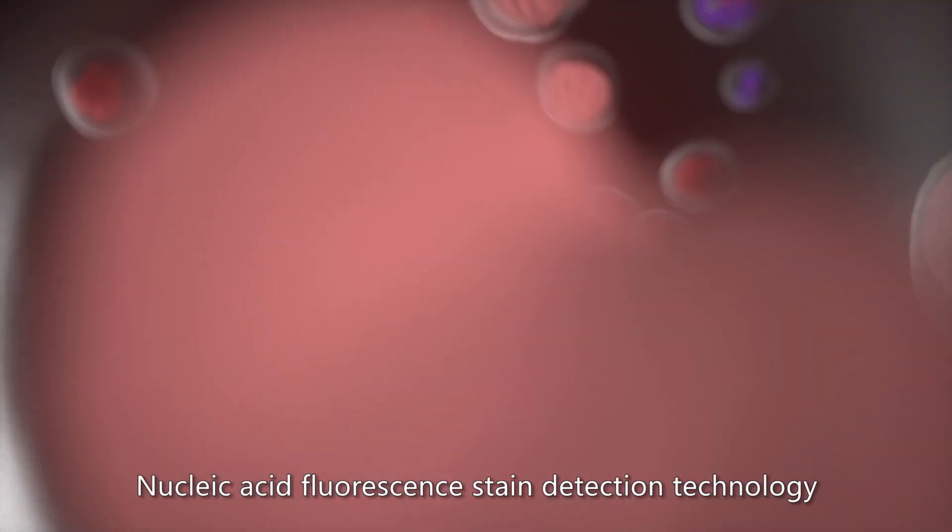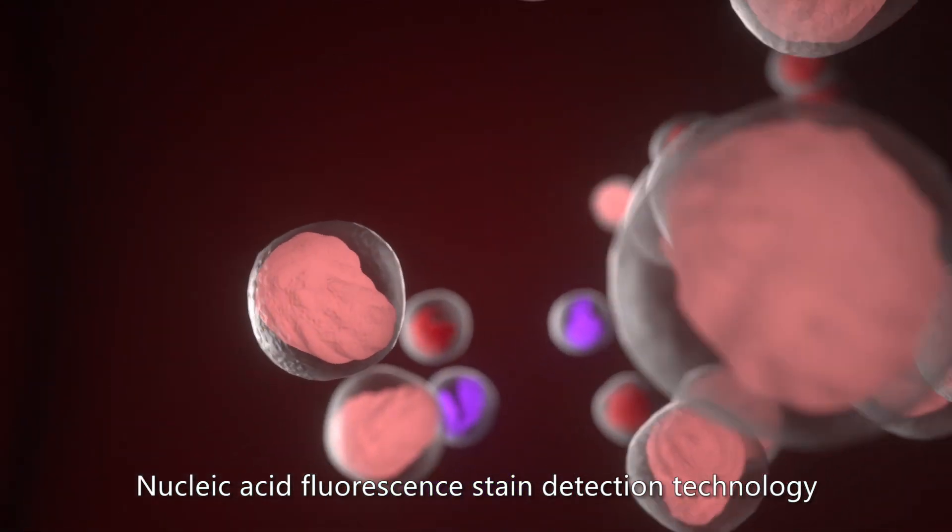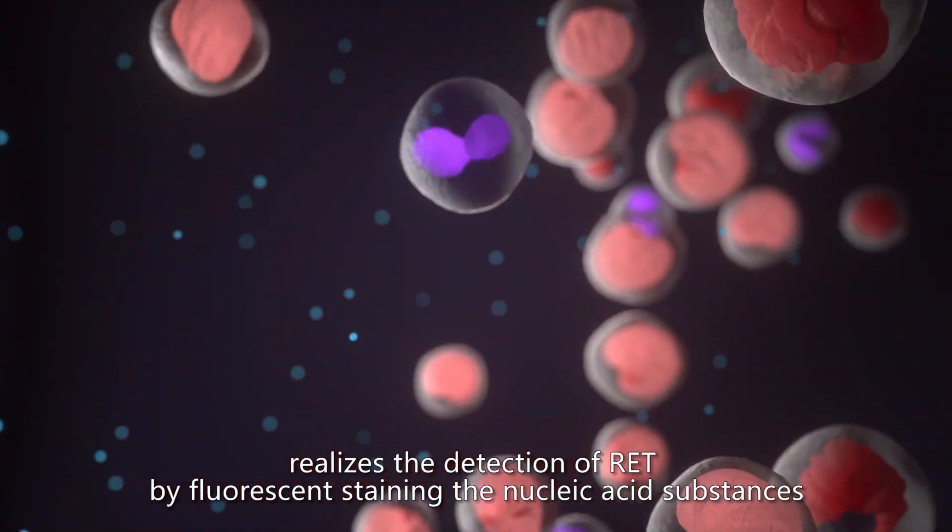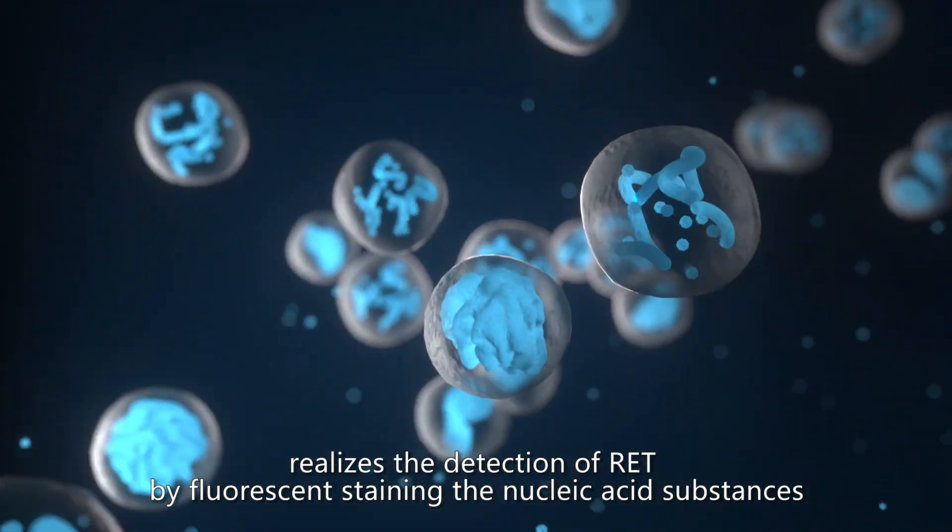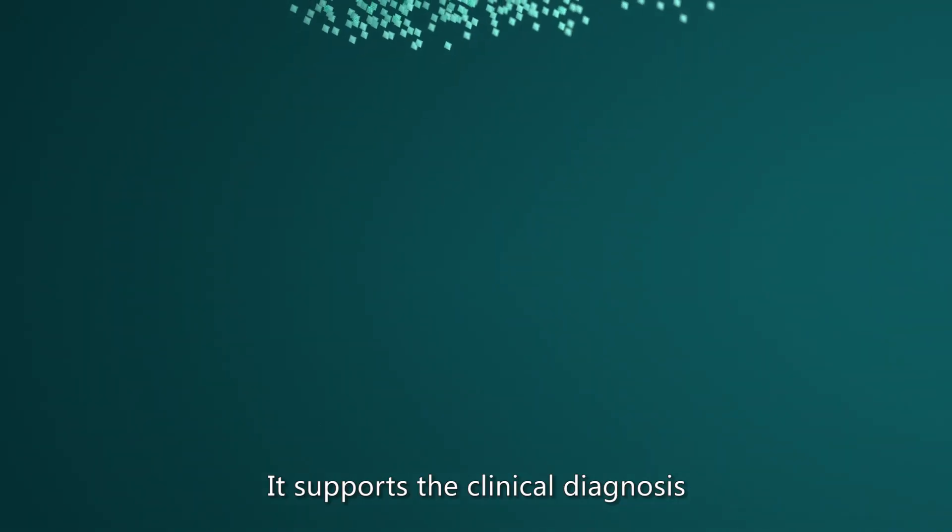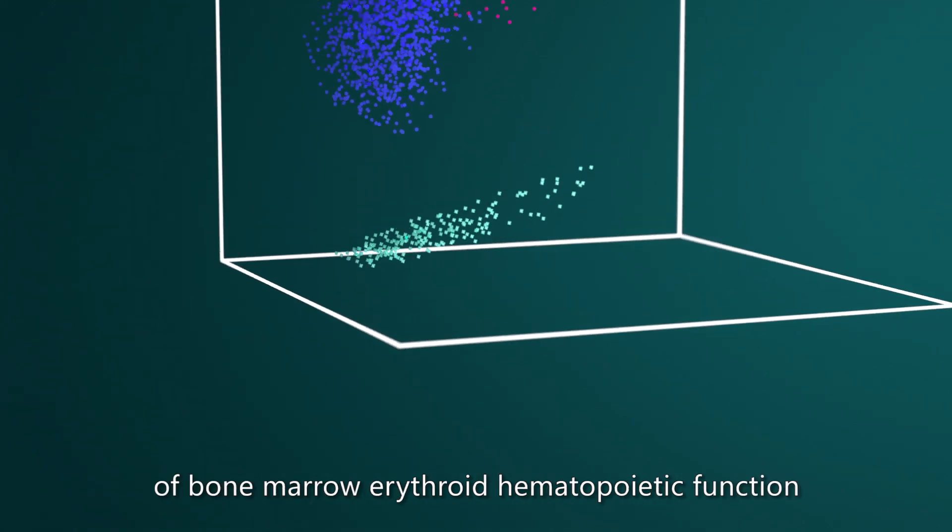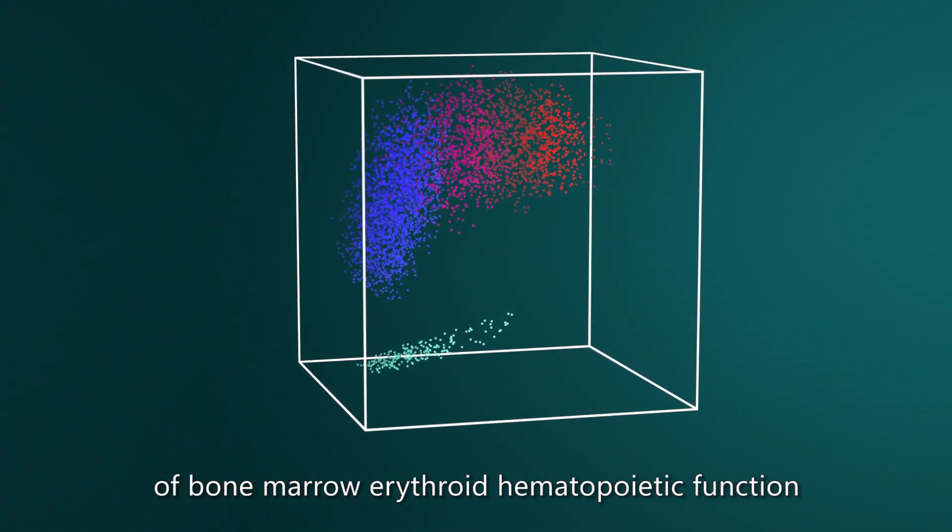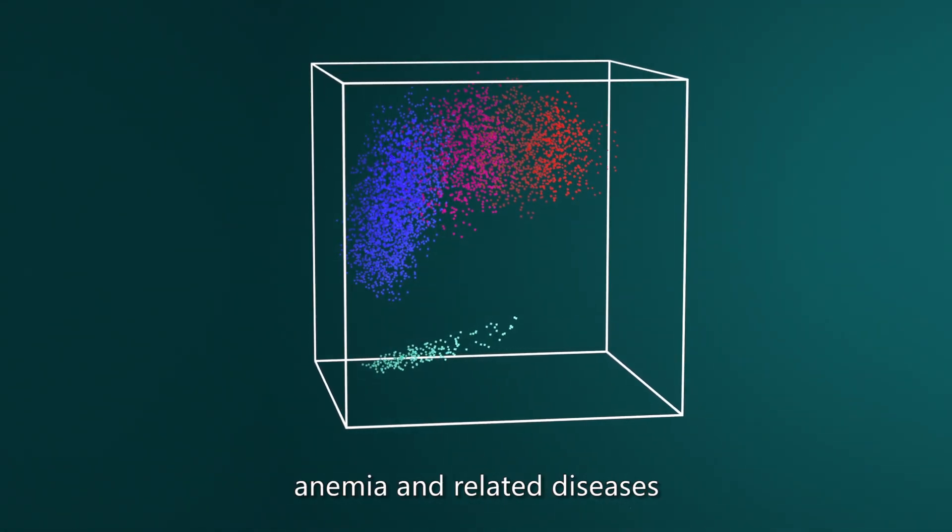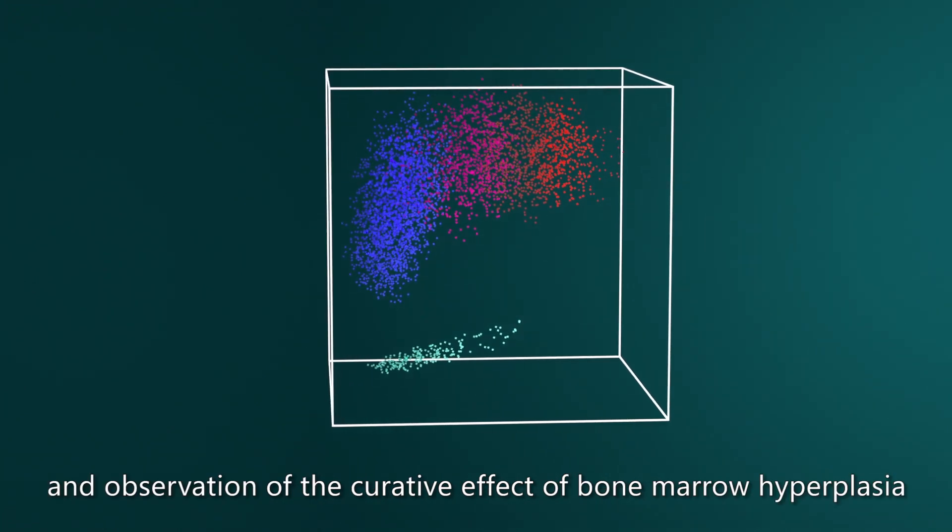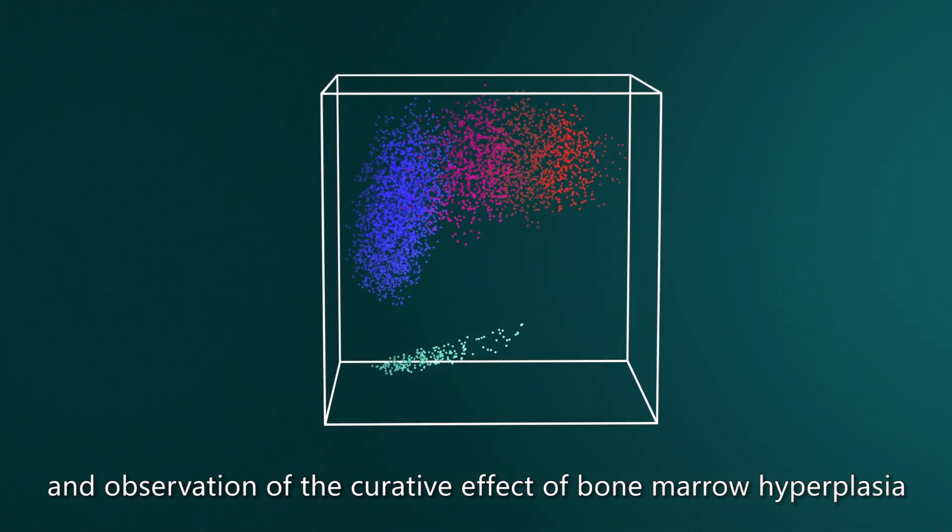Nucleic acid fluorescent stain detection technology realizes the detection of RET by fluorescent staining the nucleic acid substances. It supports the clinical diagnosis of bone marrow erythroid hematopoietic function, anemia and related diseases, and observation of the curative effect of bone marrow hyperplasia.